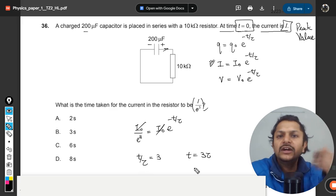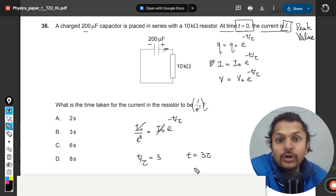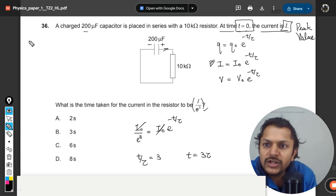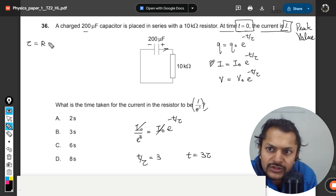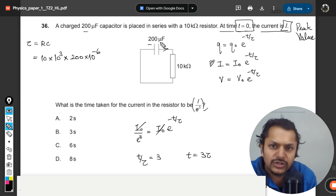So the time taken will be three times the time constant. The time constant value is not given in the question, so we will find it. Time constant is given by the product of resistance and capacitance.